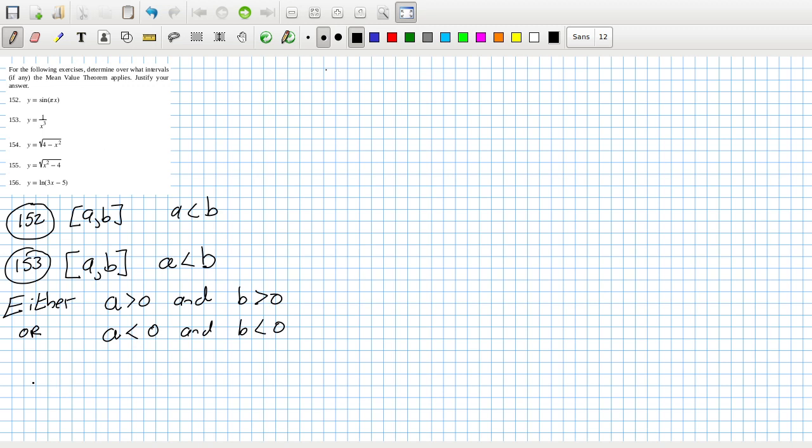154 is a little bit easier - it has to go from minus two to two. Whereas 155, that's a bit different. You need it to be at least two, so two to b.